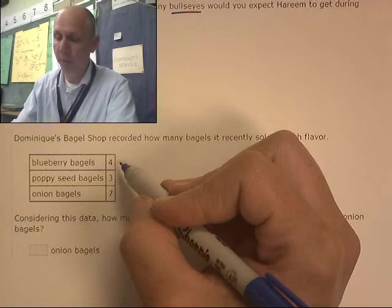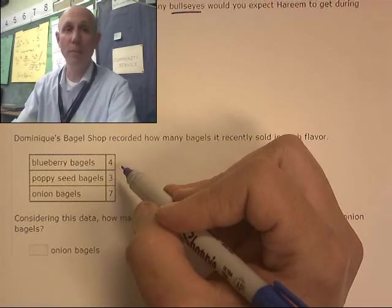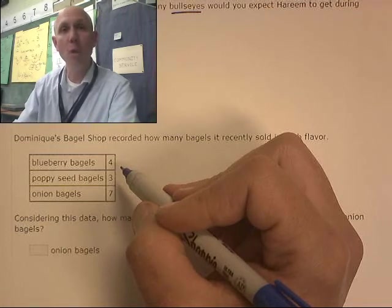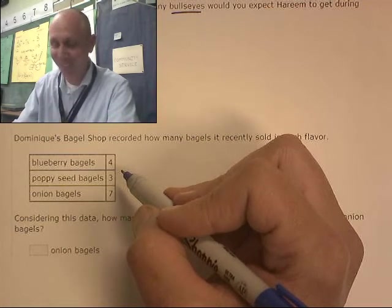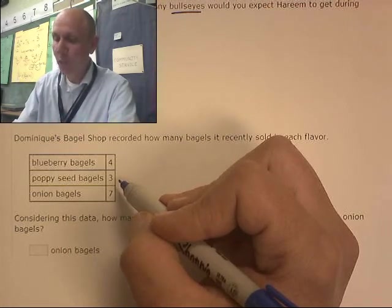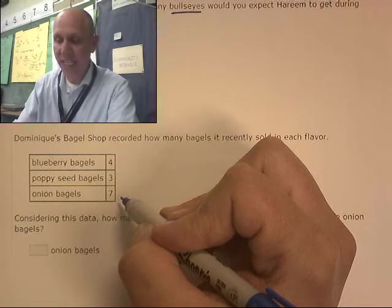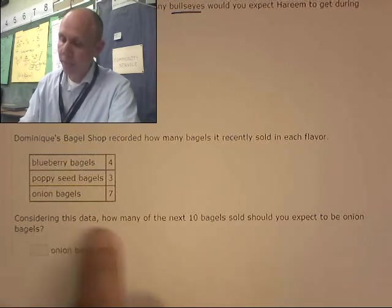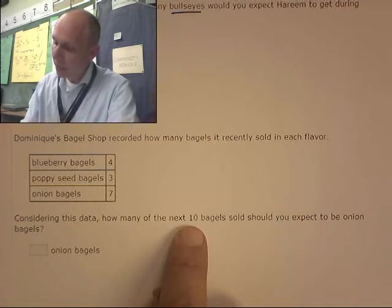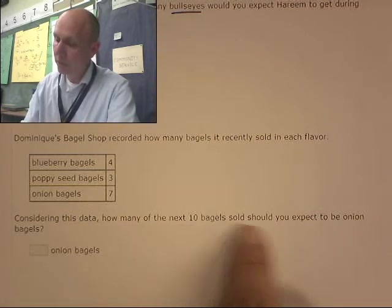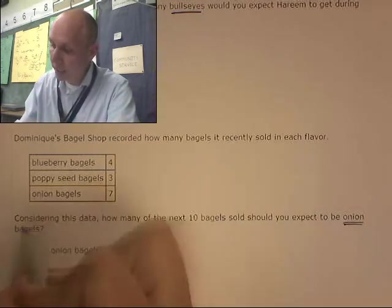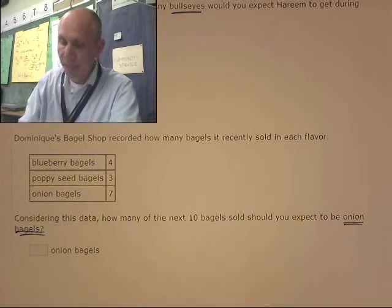Four blueberry bagels. Four blueberry bagels. It's hard to say. Three poppy seed bagels. And seven onion bagels. Considering this data, how many of the next 10 bagels sold should you expect to be onion bagels?